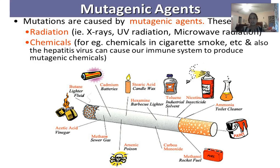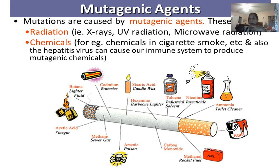Mutations caused by mutagenic agents include all of these different properties — biological reasons like TEs and spontaneous mutations, but also viruses acting as mutagenic agents, radiation such as X-rays, UV radiation, and microwave radiation, and chemicals like those in cigarette smoke, lighter fluid, fuel, paint, bug sprays, preservatives, pesticides, and household cleaners. All of these can contain chemicals that act as mutagens, and it's extremely important to be aware of those so we know when and where to protect ourselves.